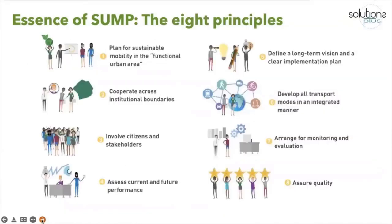The essence of the sustainable urban mobility plan is divided into eight principles. The first is that we need to plan for sustainable urban mobility within the functional urban area. There is a need to cooperate across relevant institutional boundaries, and we need citizen and stakeholder participation for a sustainable urban mobility plan to be well formulated.